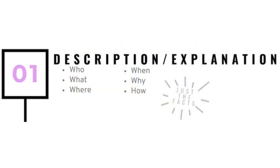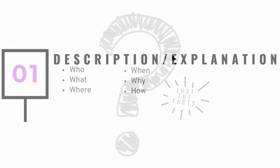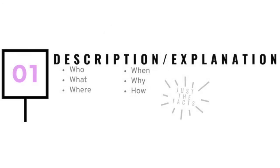Description, or explanation as it is sometimes referred to, describes the topic and its characteristics. This text structure answers the essential questions — who, what, where, when, why, and how — leaving the reader with a factual understanding of the topic at hand. Overall, description writing includes specific details about the topic.